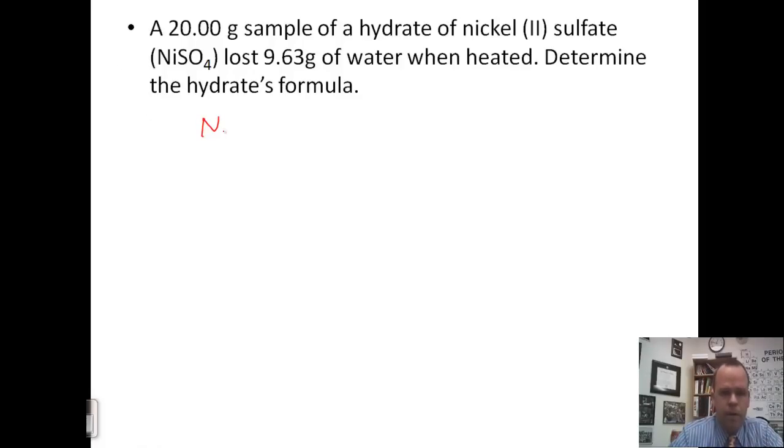So just like with empirical formulas we've done, we're going to put, in this case, compounds, whereas last time we used elements. We'll make a column for each one. The nickel(II) sulfate will be 20 minus 9.63, since it lost 9.63, so it will be 10.37 grams. And the water will be 9.63 grams.